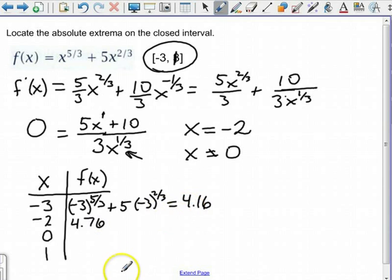So that's greater than f of negative 3. Let's plug in 0. Well obviously if I plug in 0 there and there I'm going to get out 0. And finally let's plug in 1. Well that's going to be 1 to the 5 thirds which is 1 plus 5 times 1 to the 2 thirds which is 5 and I get out 6.